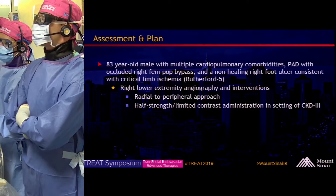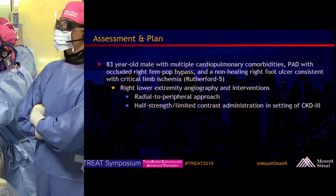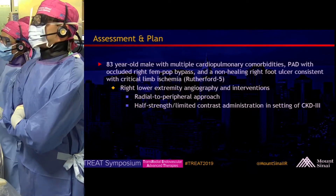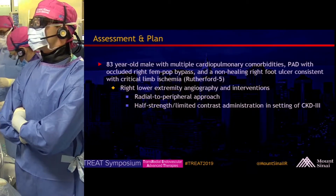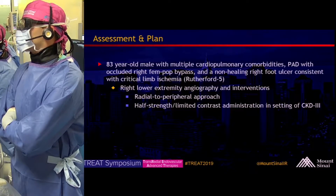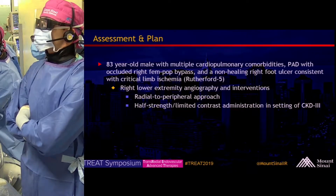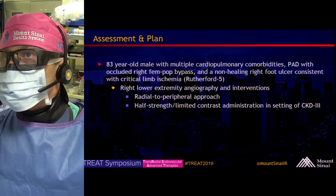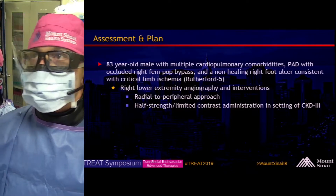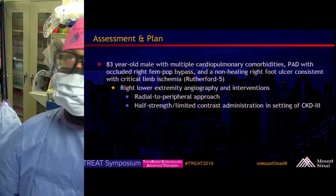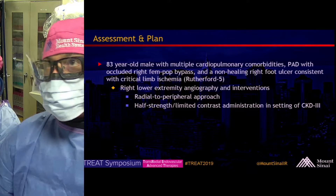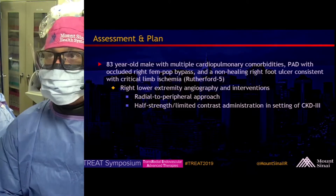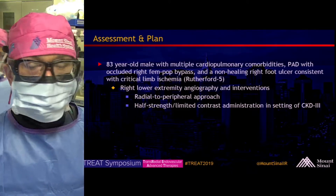Our assessment and plan: this is an 83-year-old male with multiple cardiopulmonary comorbidities. He has a history of peripheral arterial disease with an occluded right fem-pop bypass, non-healing right foot ulcer, consistent with critical limb ischemia, Rutherford 5. Our plan is for right lower extremity angiography and intervention using a transradial peripheral approach, with limited and half-strength contrast where appropriate on account of the patient's CKD.